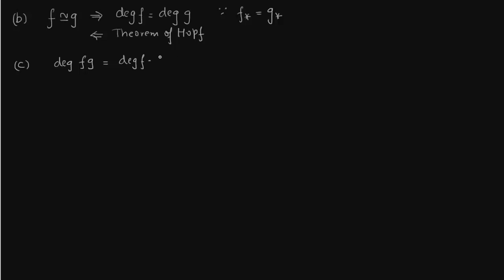So degree of map fg is degree of f times degree of g. So this is again clear from property 1. fg_star is equal to f_star times g_star. Now f_star itself is multiplication by an integer. g_star is a multiplication by integer. So when you compose two maps, two multiplications together, they are multiplication of the integers. So it is d1 times d2. Yeah, this is just from the homomorphism. The homomorphism of integers.